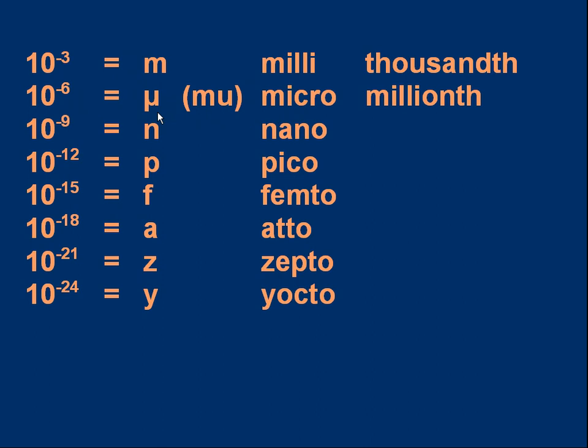A thousand times smaller than that takes us to 10⁻⁹. That's nano. A thousand times smaller than that, 10⁻¹², pico. A thousand times smaller than that, 10⁻¹⁵, femto. And so on, all the way down to 10⁻²⁴, yocto. In fact, only the first four or five are used commonly, but there they all are if you want to learn them all.